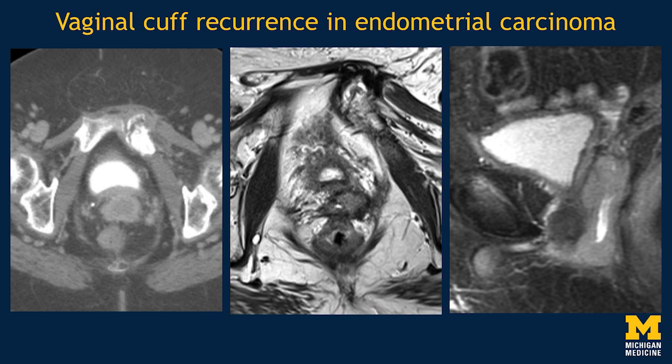A note about patterns of recurrence in endometrial carcinoma: up to 10% of patients with endometrial cancer will recur without adjuvant therapy, and 70% of those recurrences will be in the vaginal cuff. It's incredibly important whenever you're looking at post-op imaging in a patient who's had endometrial cancer to look at the vaginal cuff. On CT, we can see an irregular mass interposed between the bladder and the rectum. We can see it as that same 'evil gray' on T2-weighted imaging. This is a very common pattern of recurrence in endometrial carcinoma.